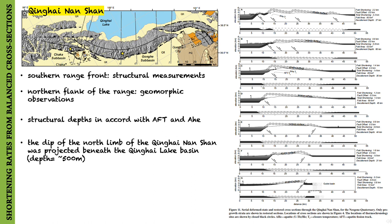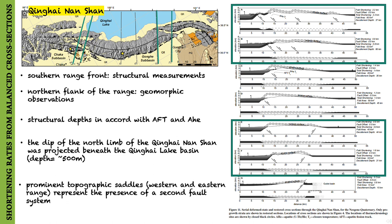Where the erosion surface of the northern flank is buried by Qinghai Lake Basin fill, they projected the dip of the north limb beneath the basin to a depth of about 500 meters. A more speculative assumption is that in the western part near Chaka and in the eastern part, a prominent topographic saddle marks the presence of a second fold system, such that the range is a composite of two large-scale imbricate faults.